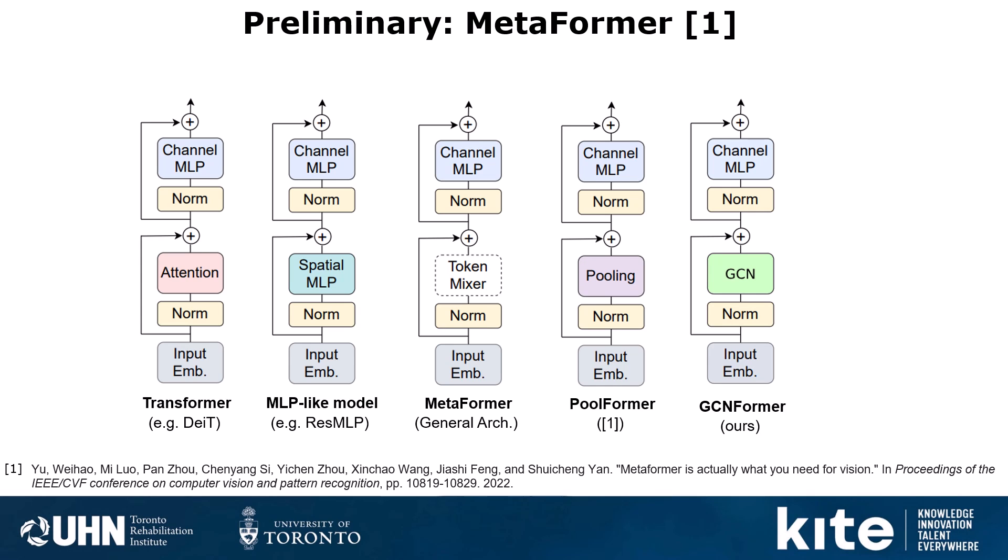Since Attention mixes the information among all the tokens, but GCN mixes the information in local neighborhoods, they can extract complementary information that can be helpful for the task of 3D pose estimation.